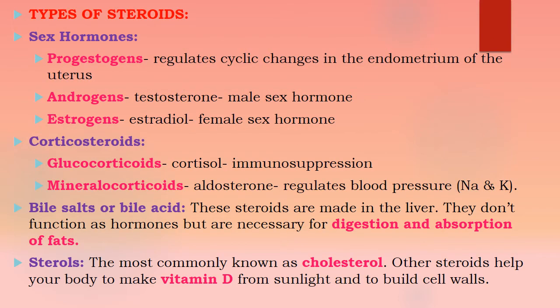Types of steroids. We have to know that there are varieties of steroids available, and based upon that, the production in pharmaceutical companies will depend. The first one is sex hormones, then corticosteroids, then bile salts and bile acids, and sterols. These are the steroid components.